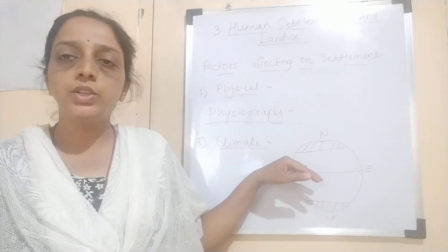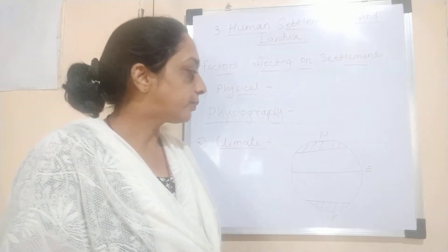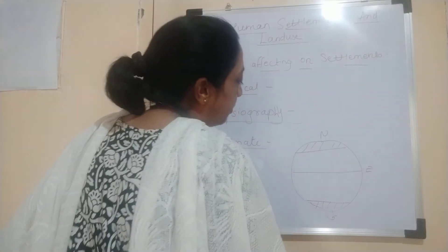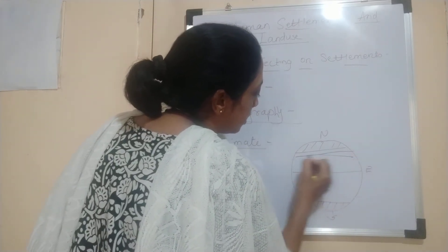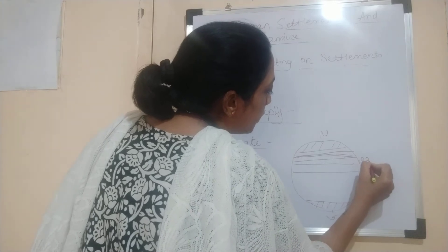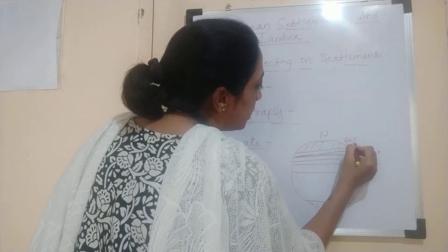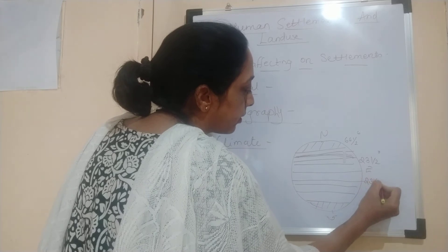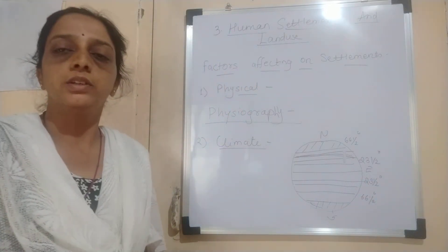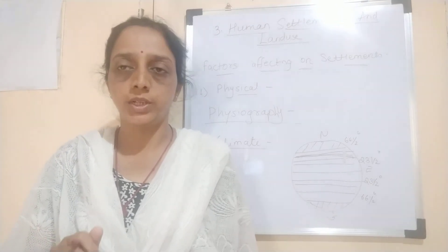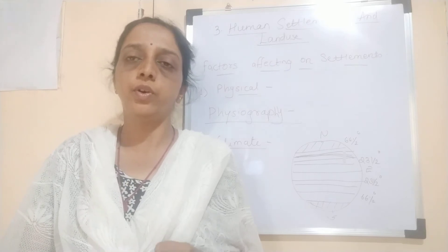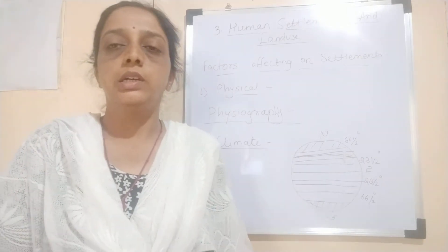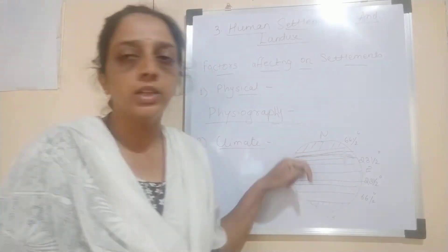The third region is the temperate region, which lies between 23.5 degrees and 66.5 degrees in both hemispheres. This region has a moderate climate — moderate temperature and moderate rainfall. So most of the population is found here, and the number of settlements is also more in this region.